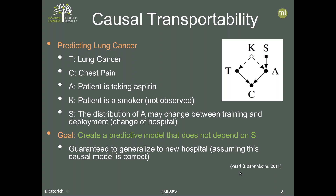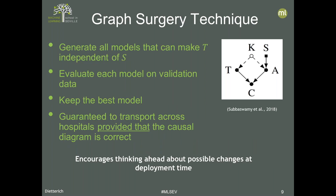In an important paper by Pearl and Bareinboim back in 2011 that won the AAAI best paper prize, they showed they can create what's called causal transportability — if the causal model is correct, they can learn a classifier guaranteed to work correctly in a new hospital as well as the old. Suchi Saria's group at Johns Hopkins has refined this technique, handling a slightly larger family of models: they use the causal diagram to generate all possible models that make the cancer variable independent of the selection variable, evaluate each on validation data, and keep the best — guaranteed to transport across hospitals provided the causal diagram is correct.